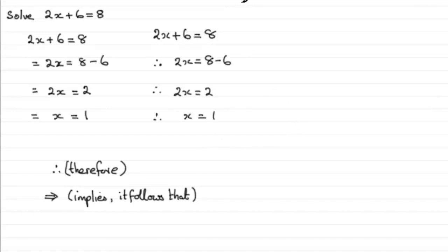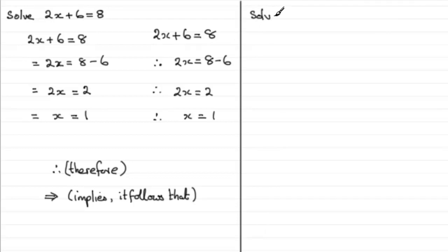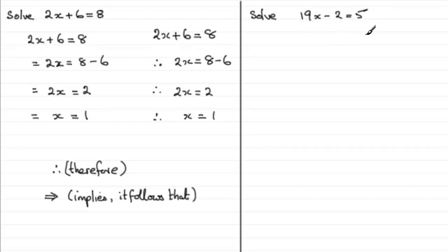Now I'm going to introduce you to another question where I often see common mistakes. We've got to solve 19x minus 2 equals 5. I would definitely encourage you to pause the video and have a go at this question. I've kept it very straightforward — it's not about actually solving the equation, it is about how you set it out and whether you write down sensible statements. So pause the video, have a go, come back when ready, and see what solution you've got.